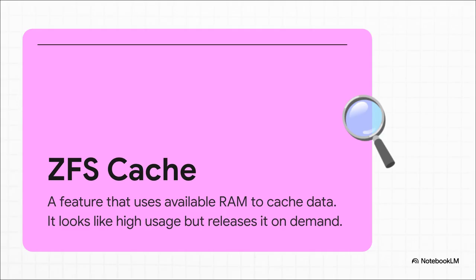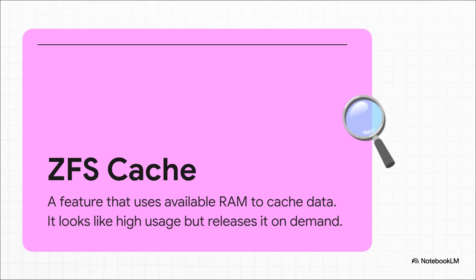ZFS is a really popular file system, and one of its key features is using any available unused RAM as a read cache to speed things up. It's a classic gotcha for people new to ZFS — you see that high RAM usage and you start to panic, but it's actually a sign of a healthy, optimized system. You could call it 'aggressively helpful' memory usage. The VMs themselves were only using a tiny fraction of the total RAM; a whopping 50% was dedicated to that ZFS cache, making it look like the system was under heavy load when it was actually just optimizing itself for speed.